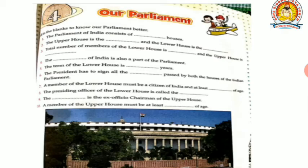Question 6: The President has to sign all the bills passed by both the houses of the Indian Parliament. Question 7: A member of the lower house must be a citizen of India and at least 25 years of age. Question 8: The presiding officer of the lower house is called the Speaker. Question 9: The Vice President is the ex-officio Chairman of the upper house. Question 10: A member of the upper house must be at least 30 years of age. This was all about your fourth chapter — study well and take care. Thank you.